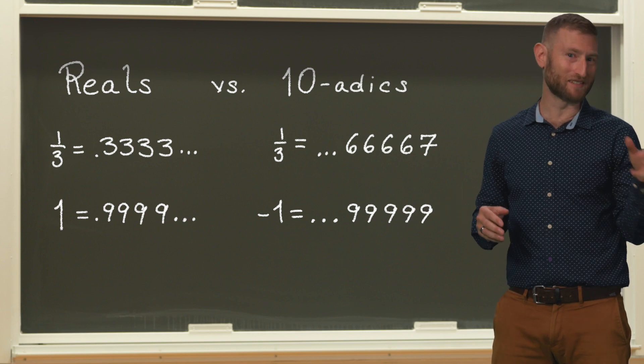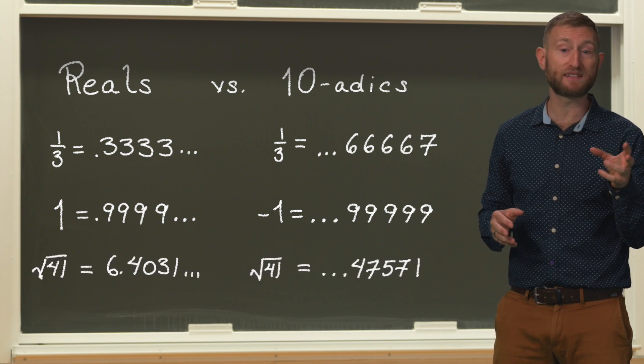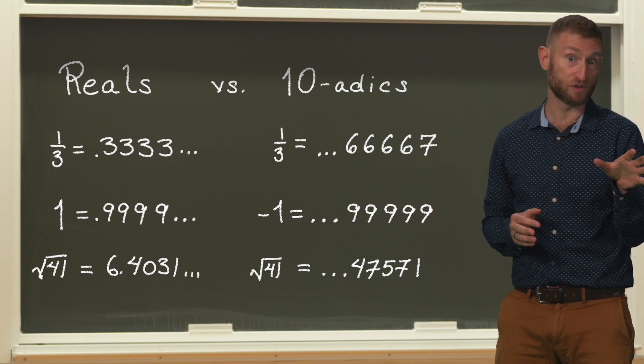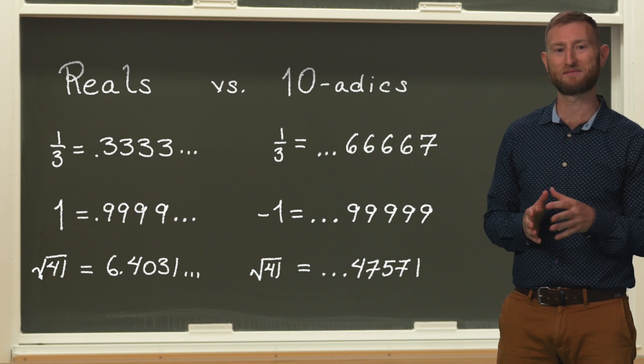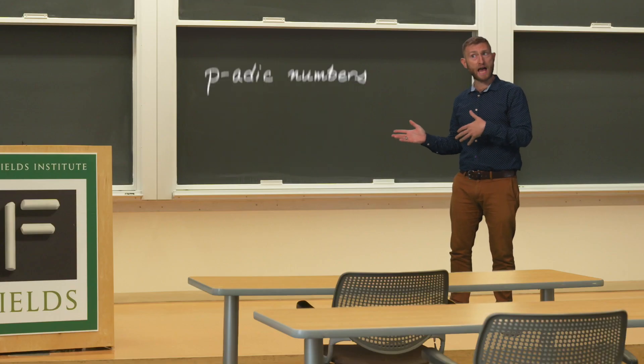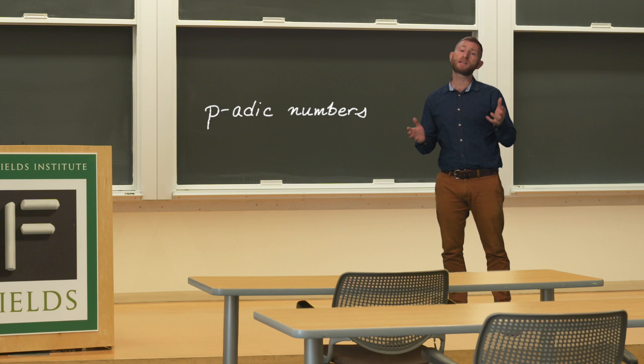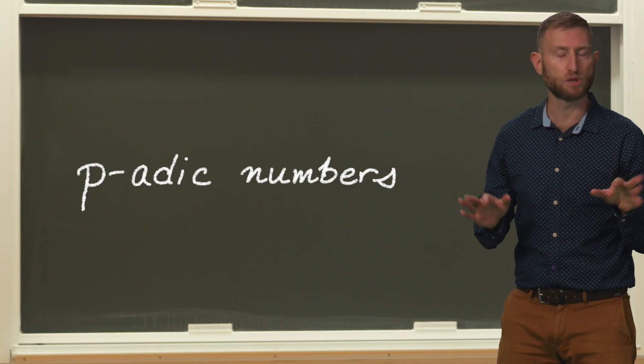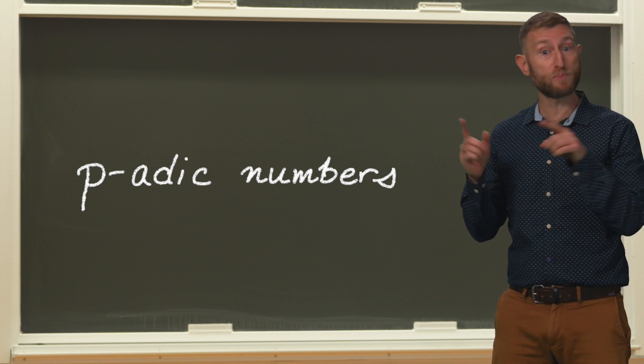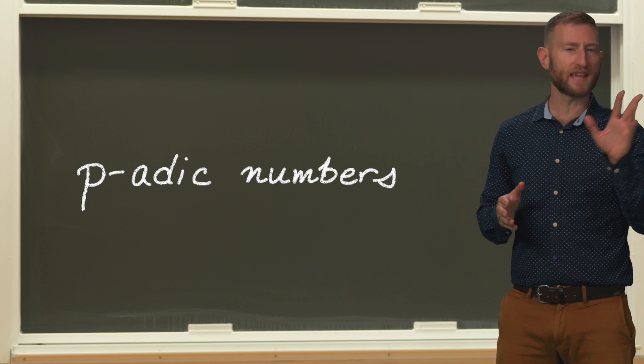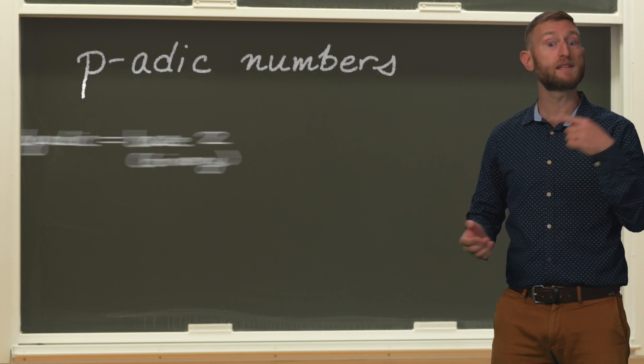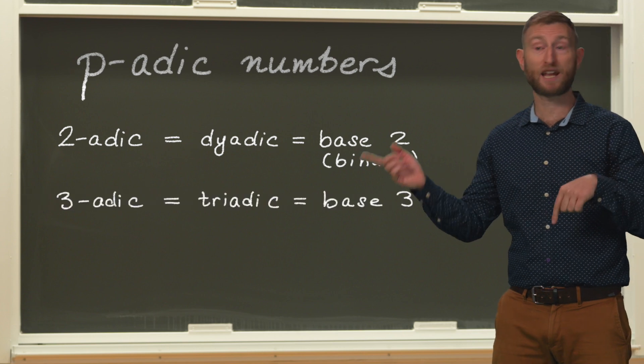We have described the 10-adic numbers here, but by working with a base other than 10, you can define the p-adic numbers for any base p. For reasons I won't get into, mathematicians usually only allow p to be a prime number. And in case you were wondering, the idea behind the name is to extend the pattern dyadic for 2, triadic for 3, etc.